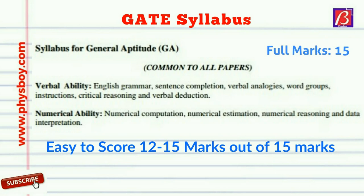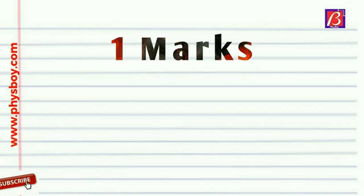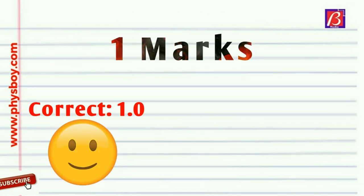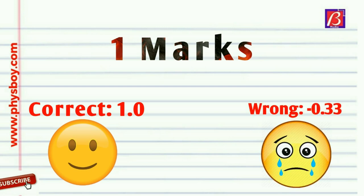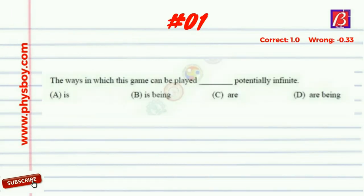Let's begin with one-mark questions. For a correct answer you will get one mark, and for a wrong answer you will get minus 0.33 marks. Friends, be careful of negative marking.